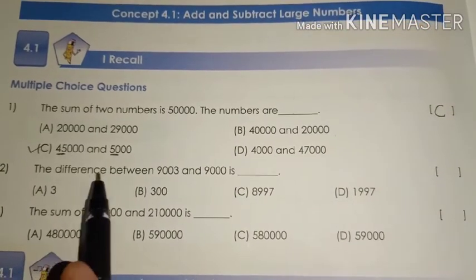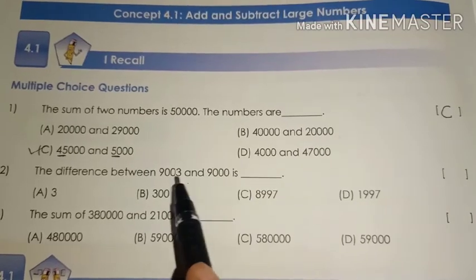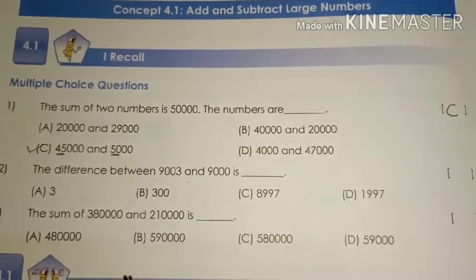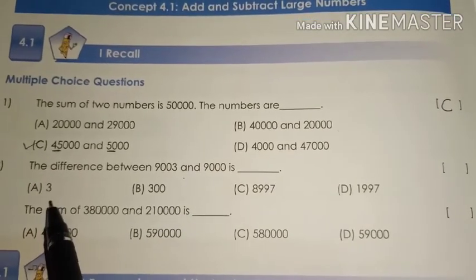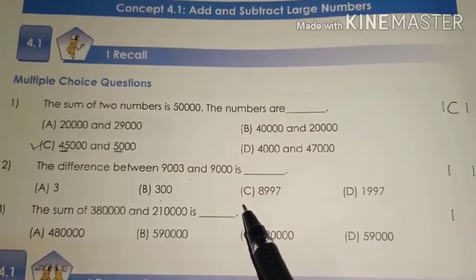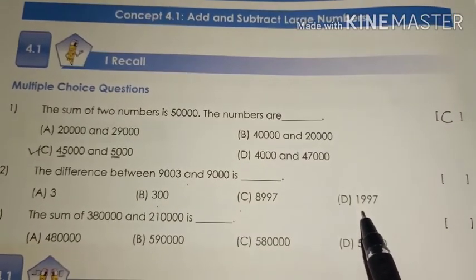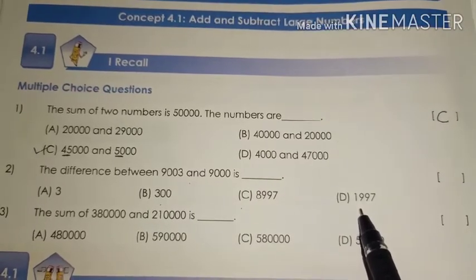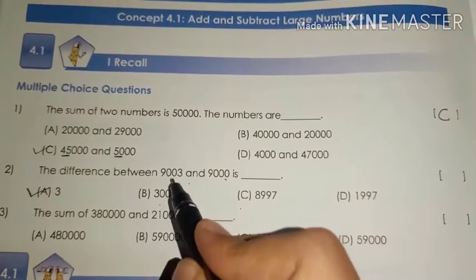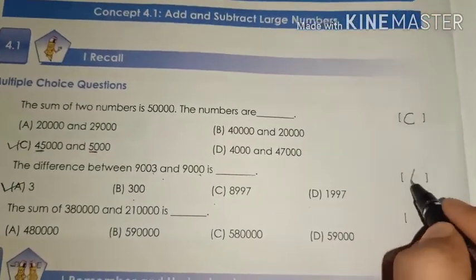Next question: the difference between 9,003 and 9,000 is — Option A: 3, Option B: 300, Option C: 8,997, Option D: 1,997. The right answer is Option A. When you subtract 9,000 from 9,003, you get the remaining answer as 3.